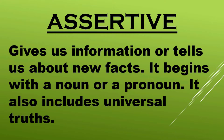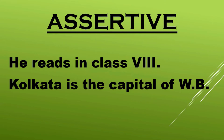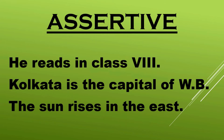Assertive sentences always begin with a noun or a pronoun. They also include universal truths. Let us look at some examples: 'He reads in class 8' — this is a kind of information. 'Kolkata is the capital of West Bengal' — this is again an information. And 'The sun rises in the East,' which is one of the universal truths. These are what we mean by assertive sentences.